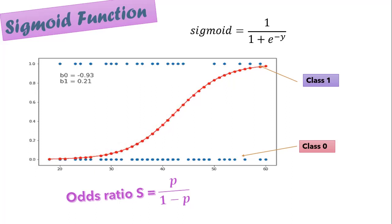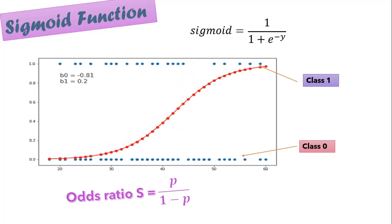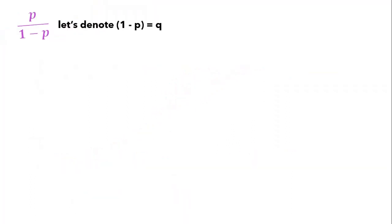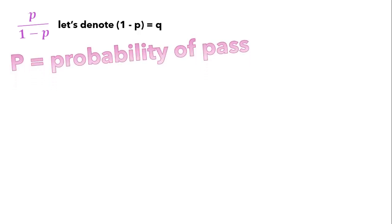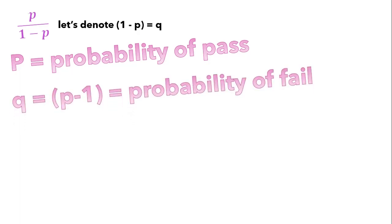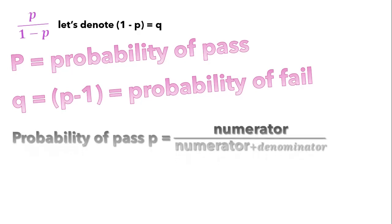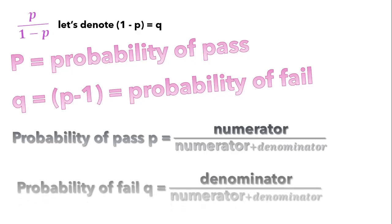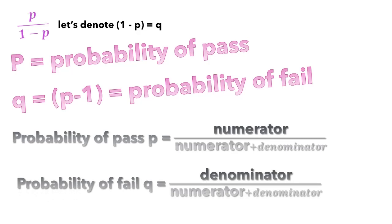The logistic or sigmoid function can be transformed into an odds ratio as p / (1 - p). Let's quickly look at one example. Here I can denote 1 - p as q for ease of calculation. Let p be the probability of pass and q be the probability of fail, that is 1 - p. The probability of pass p = numerator / (numerator + denominator), and probability of fail q = denominator / (numerator + denominator), as shown on the screen.